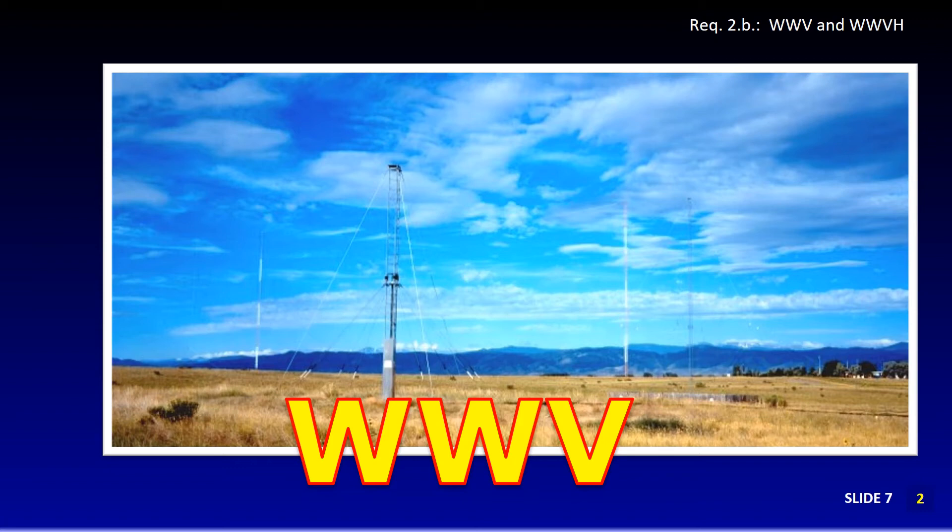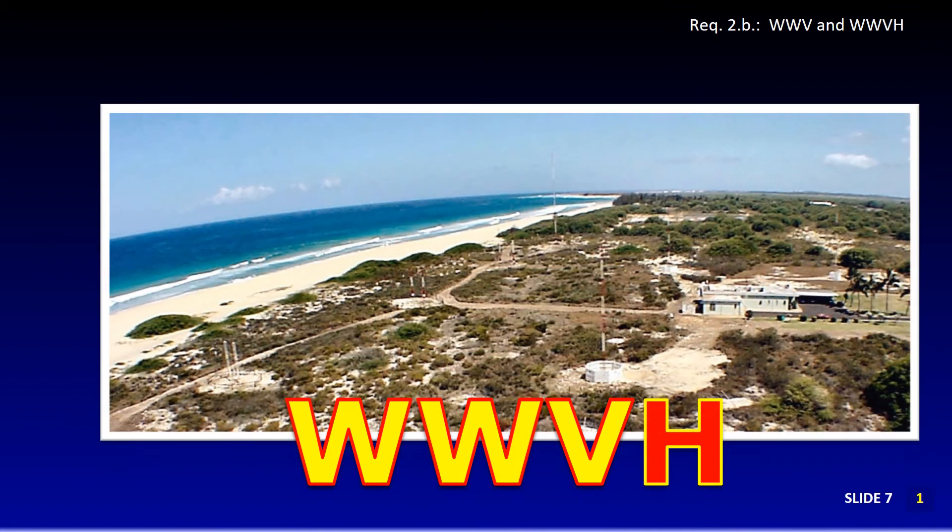WWB uses high-performance antennas to continuously transmit its signals and can be heard all over the world. They transmit simultaneously on several frequencies. Their frequencies and time signals are controlled by atomic clocks located in Boulder, Colorado. NIST also operates the very similar radio station WWVH in Kauai, Hawaii using the same frequencies.